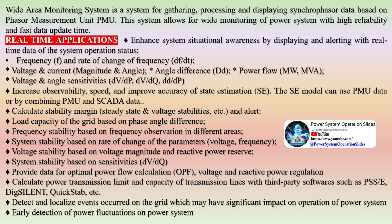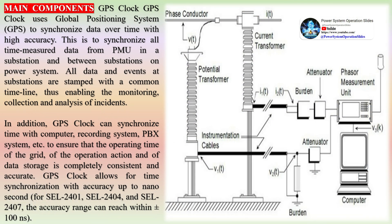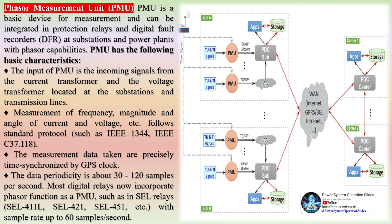Problems with SCADA-based WAMS include time-skewed data, scan rates up to 1 to 10 seconds, only magnitude measurements, and phasors through state estimation that are time-extensive. Advanced functions of energy management system (EMS) or SCADA include system monitoring and alarm functions, state estimation, online load flow, economic load dispatch, optimal power flow including optimal reactive power dispatch, security monitoring and control, automatic generation control, unit commitment, load forecasting, and log report generation.